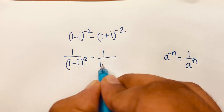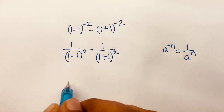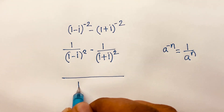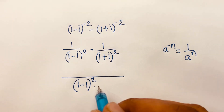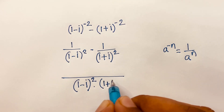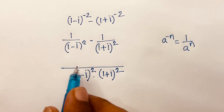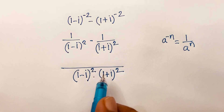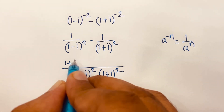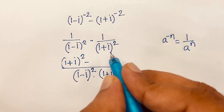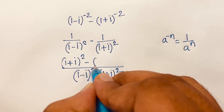Then I find the least common denominator, which is (1-i)² times (1+i)². Dividing through, the numerator becomes: (1+i)² minus (1-i)².